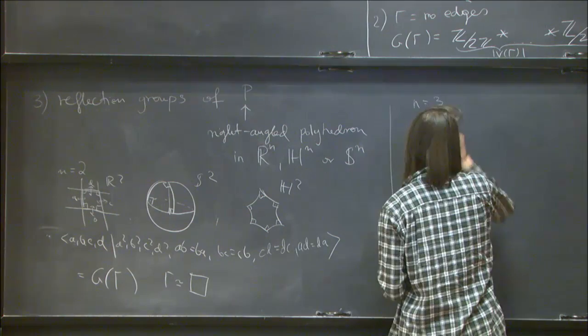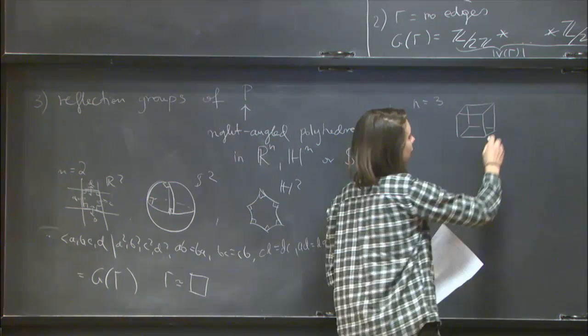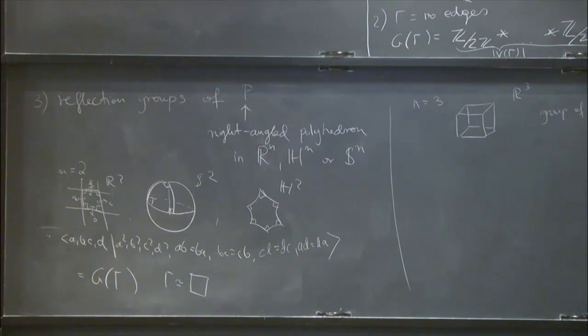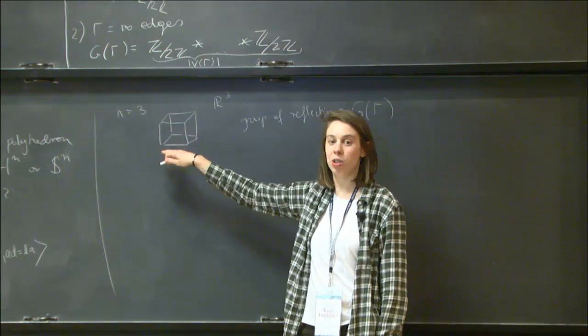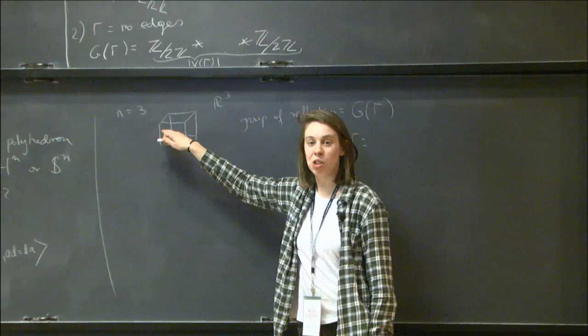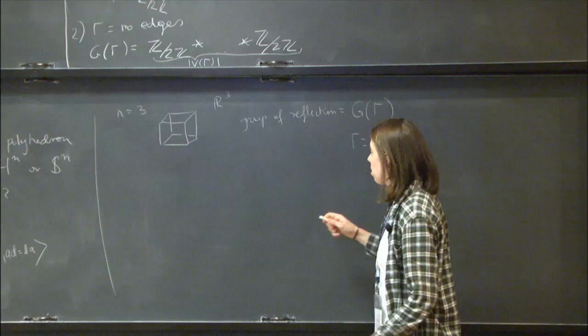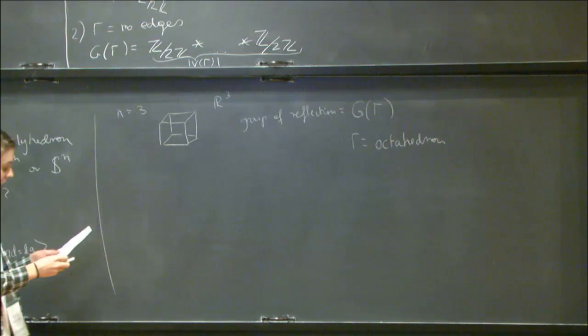For n=3, one example is reflections in planes containing faces of the cube in ℝ³. The right-angled Coxeter group for this reflection group is defined by gamma equal to the dual polyhedron — the octahedron — whose vertices correspond to faces of the cube, with an edge between two vertices if the corresponding faces meet.